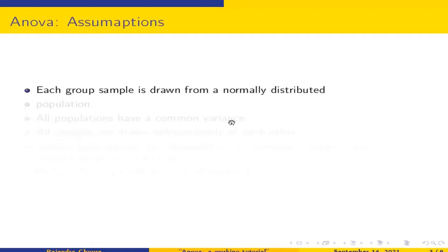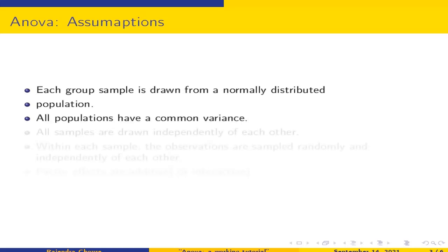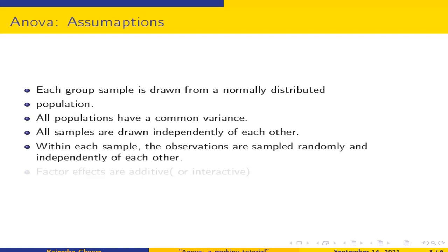To use ANOVA, the data has to fulfill some assumptions. The first assumption is that each group sample is drawn from a normally distributed population. All populations have a common variance, all samples are drawn independently of each other, within each sample observations are sampled randomly, and factor effects are additive. These assumptions shall be followed by the data before we can use it for ANOVA.